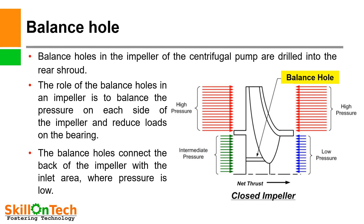Balance hole: You can see a picture of an impeller where a balance hole is shown. By providing a balance hole in the impeller, the axial thrust is balanced. Balance holes in the impeller of a centrifugal pump are drilled into the rear shroud. The role of the balance hole is to balance the pressure on each side of the impeller and reduce the load on the bearing. There are two high pressure regions visible; at an intermediate region the pressure is lower, and the suction side has low pressure. By providing a balance hole, the net axial thrust can be reduced. The balance hole connects the back of the impeller with the inlet area where pressure is low.